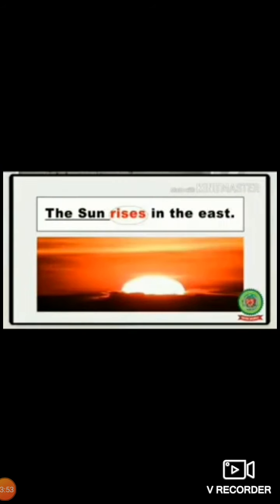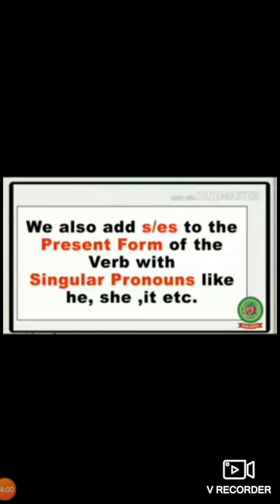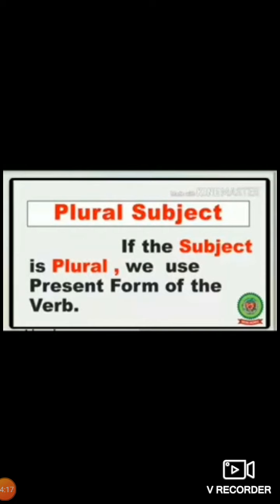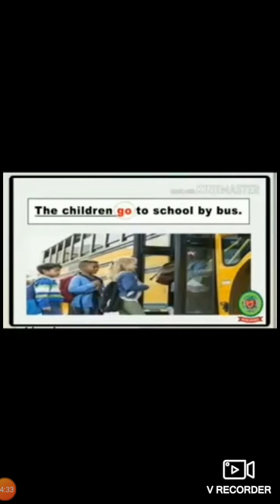For example: 'The sun rises in the east.' 'The boy flies a kite.' We add SES to the present form of the verb with singular pronouns like he, she, it — for example: 'He goes for a walk,' where go becomes goes. If the subject is plural, we use the present form of the verb: 'Bats fly at night.' 'The children go to school by bus.' Since children is plural, the verb go remains as it is.